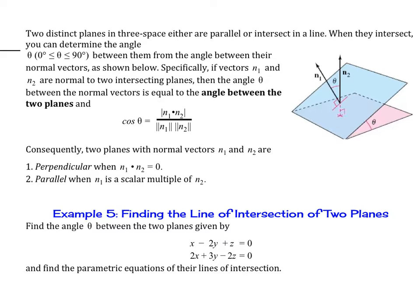Here's another side note. Consequently, two planes with normal vectors n1 and n2 are perpendicular when their dot product equals 0, and parallel when n1 is a scalar multiple of n2. This is going to be particularly helpful for question number 33 in the homework, so refer back to this later.